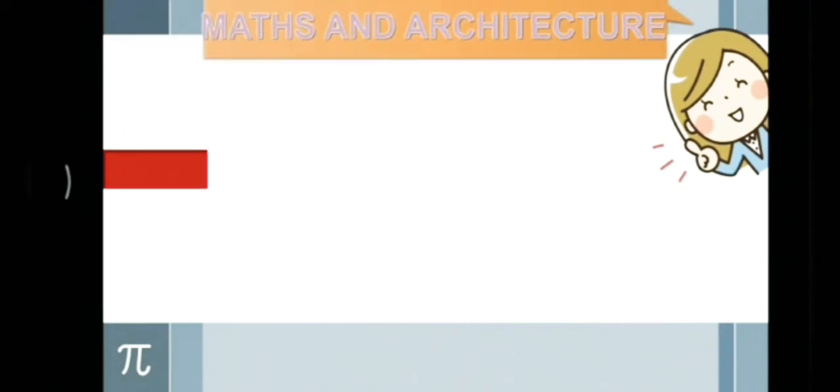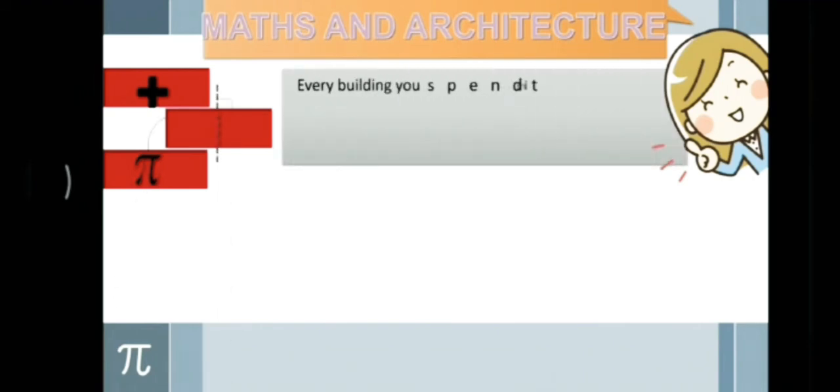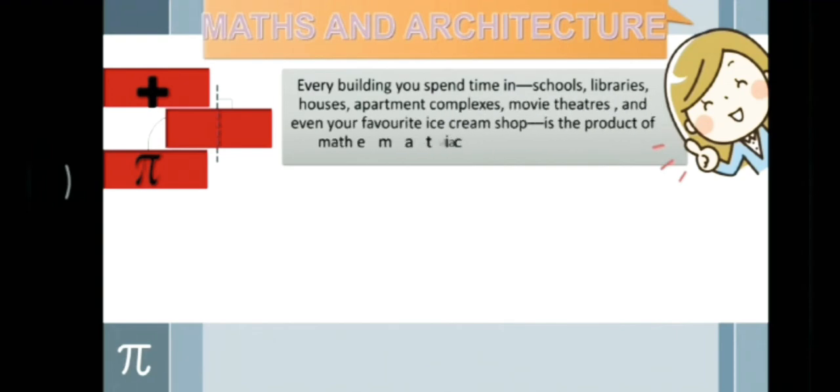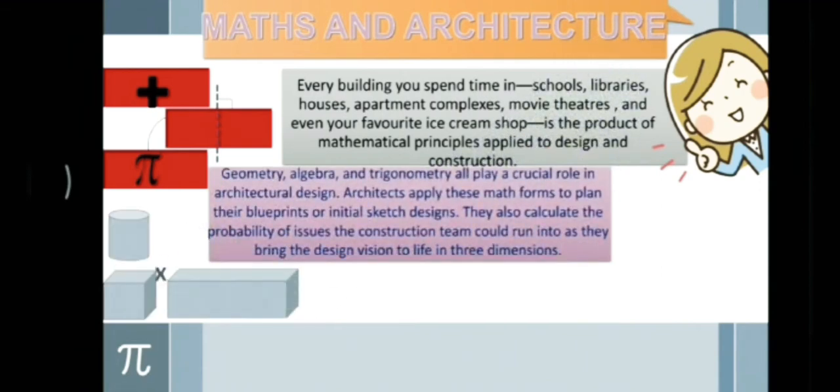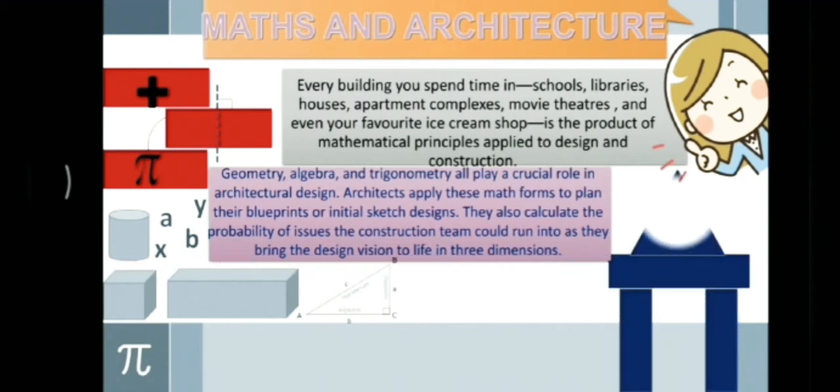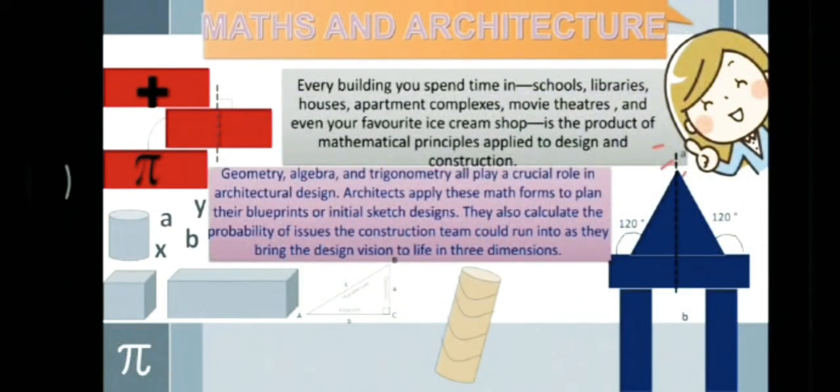Maths and Architecture. Every building you spend time in is a product of some mathematical principles applied to its design and construction. Geometry, Algebra and Trigonometry all play a very crucial role in architectural designs. Architects apply these math forms to plan their blueprints or initial sketch designs, and they also calculate the probability of issues the construction team could run into as they bring the design visions to life in three dimensions.